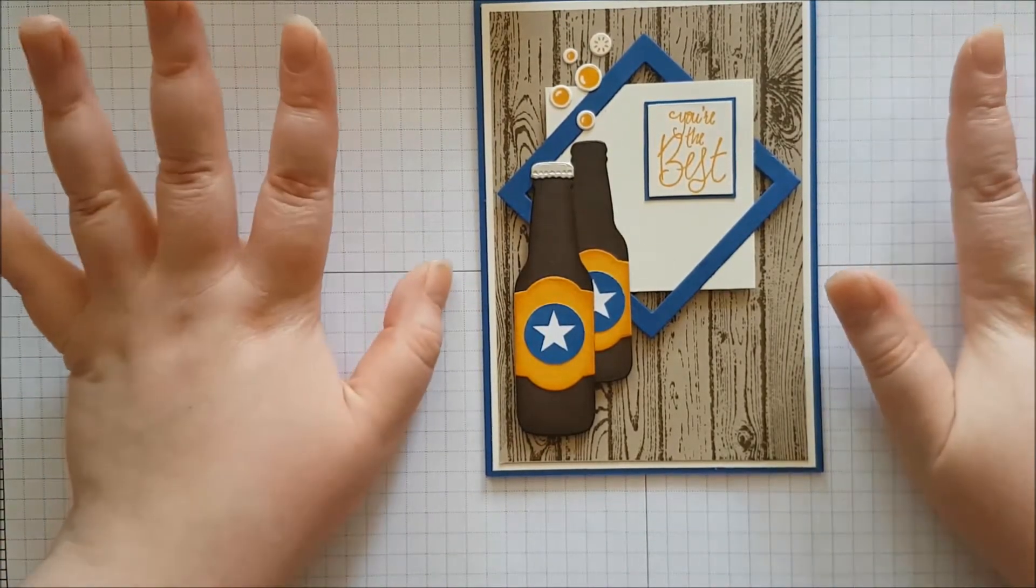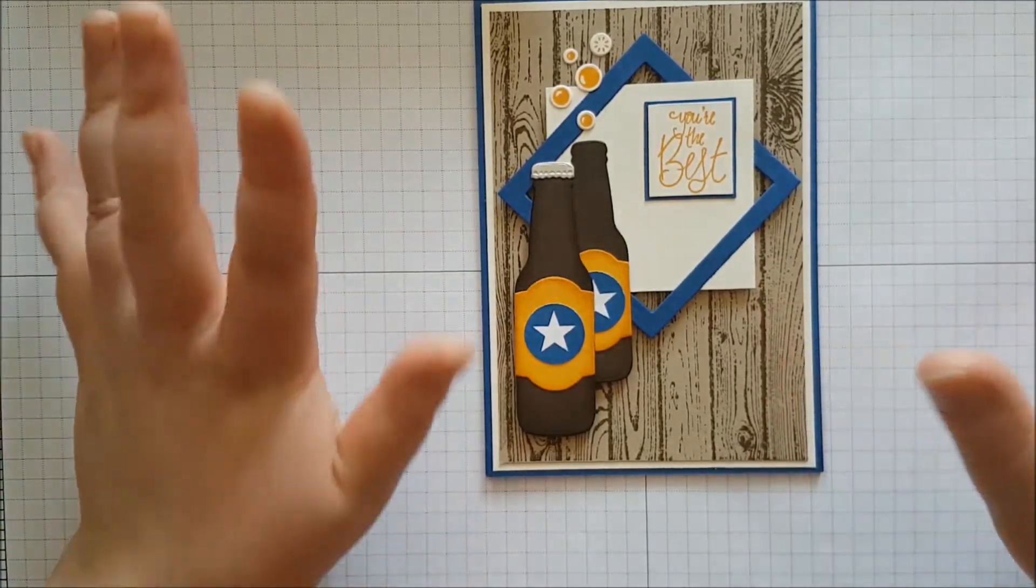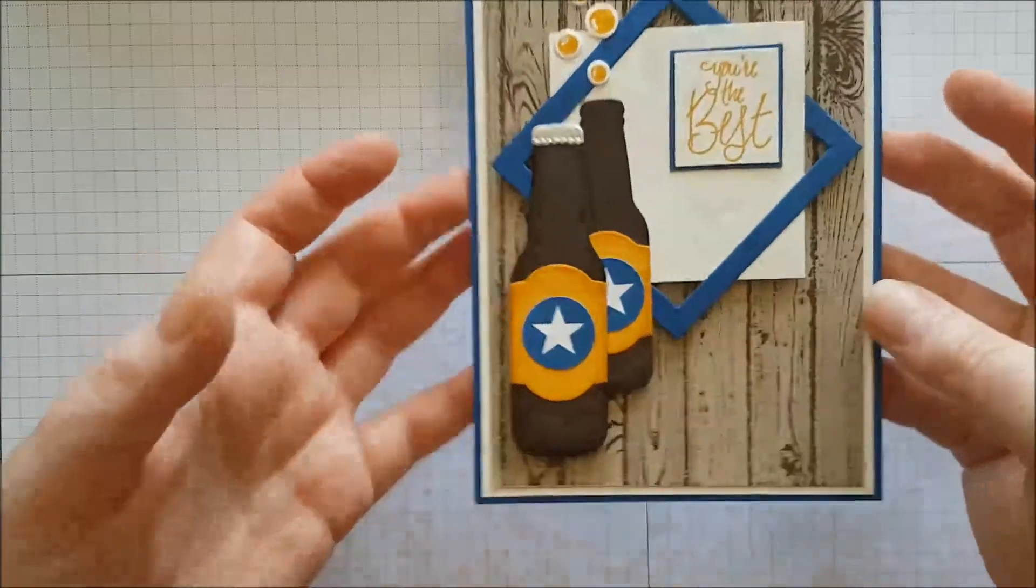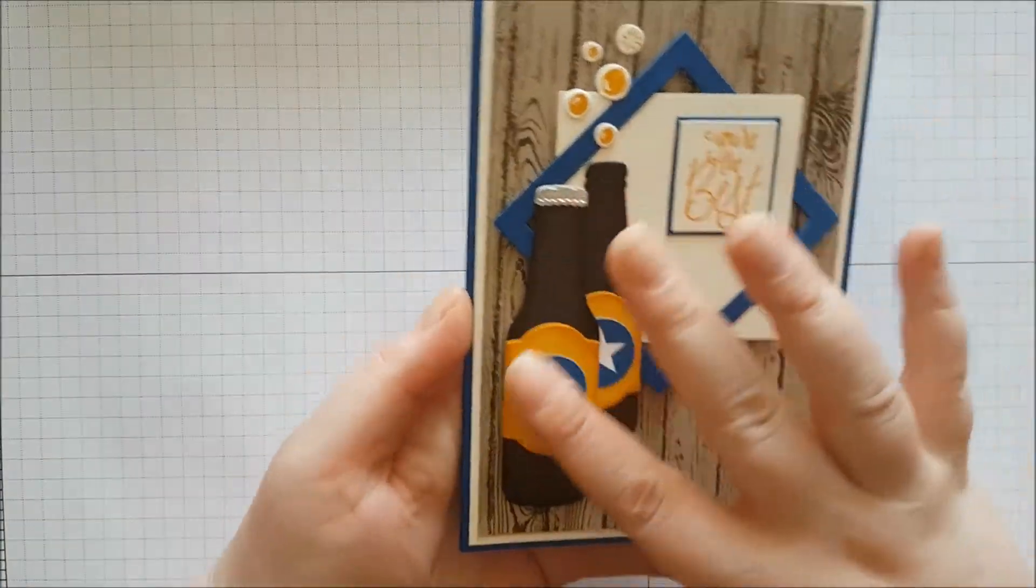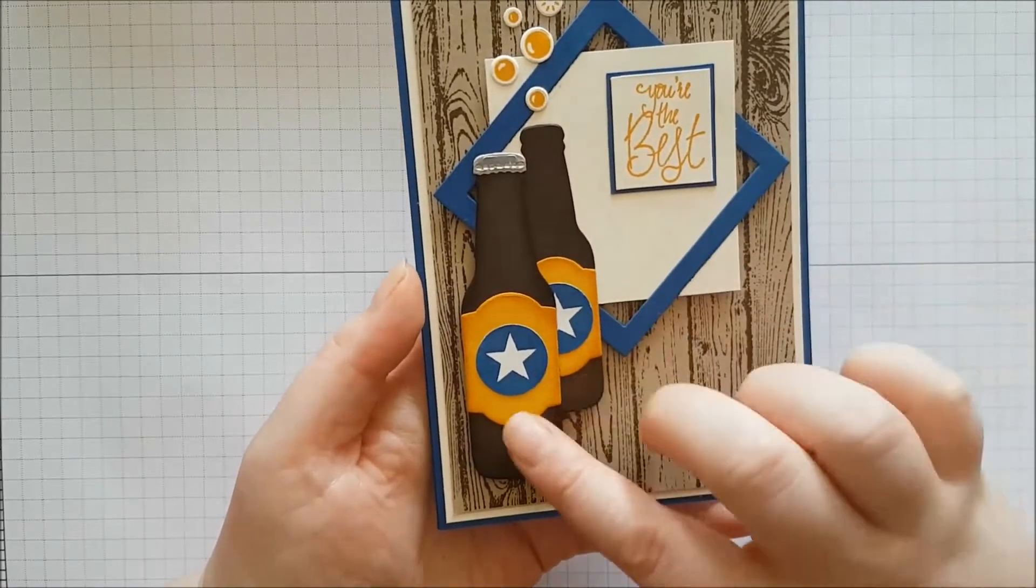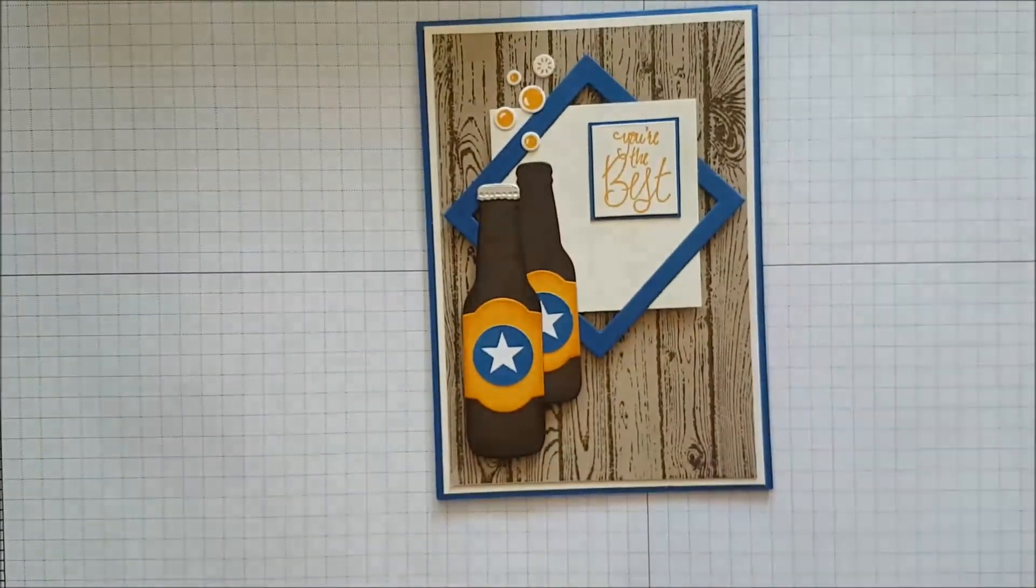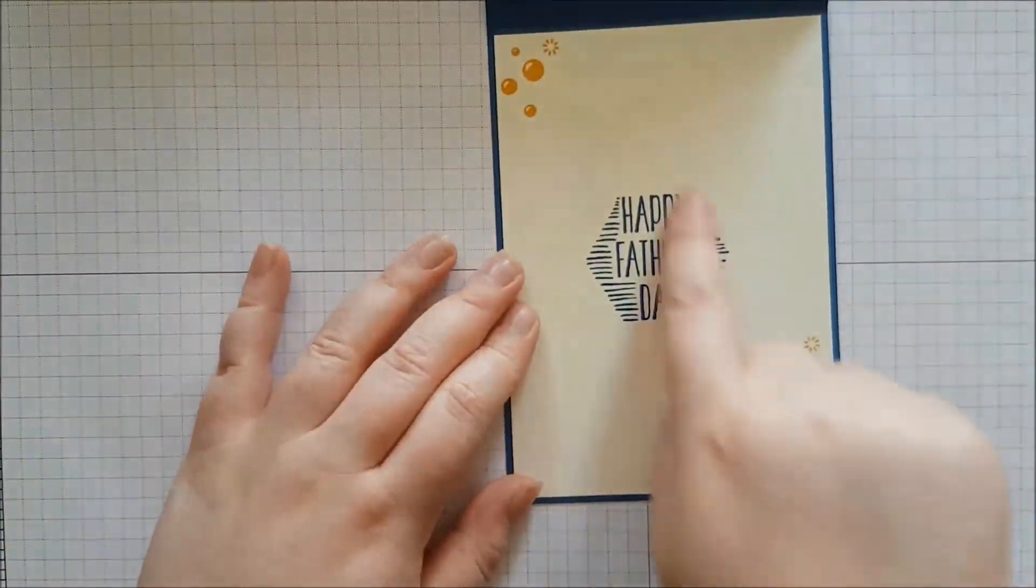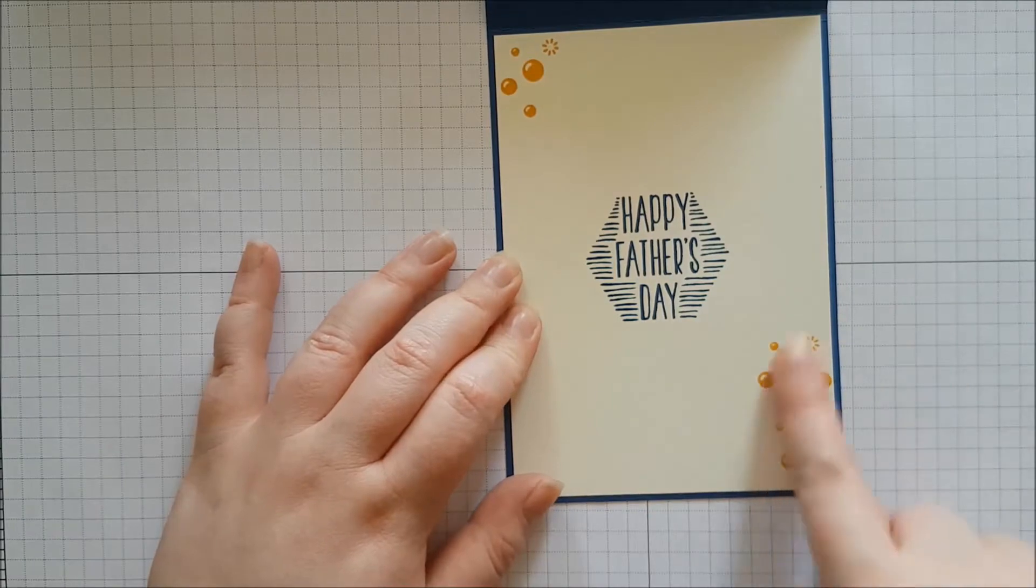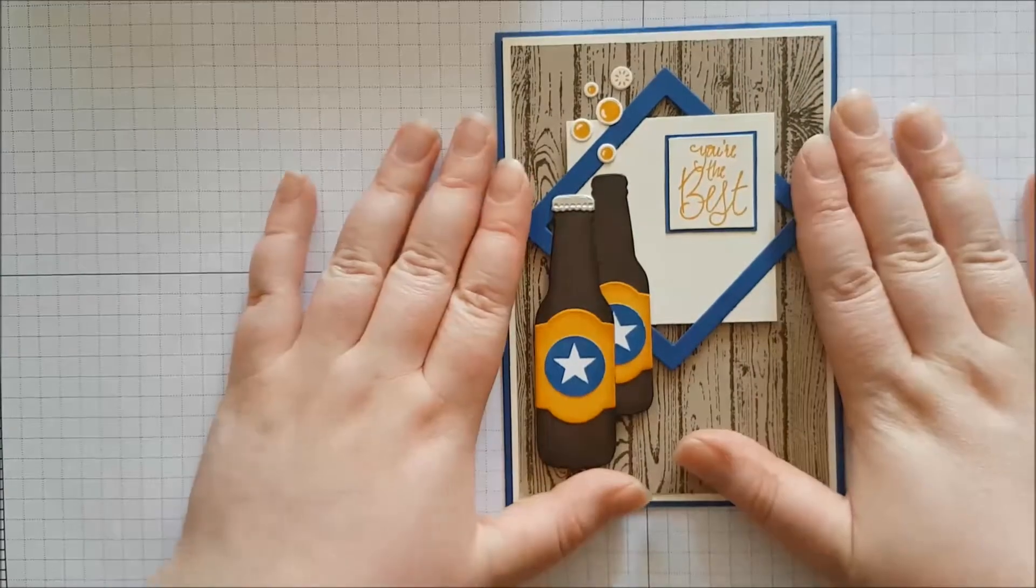Today I have for you a Father's Day card. It could be made into a birthday card depending on what sentiments you use, and we're going to be making this one. I really love how this has turned out. I love the colors. This is Blueberry Bushel with Crushed Curry, and I think it's really pretty. Inside we've got a Father's Day sentiment and some of those lovely bubbles I love using. So let's get started.